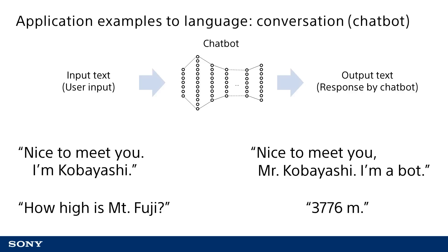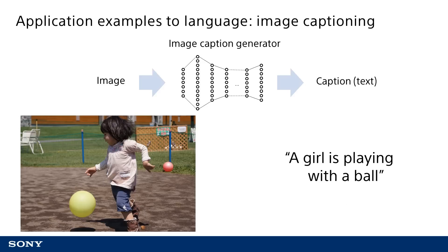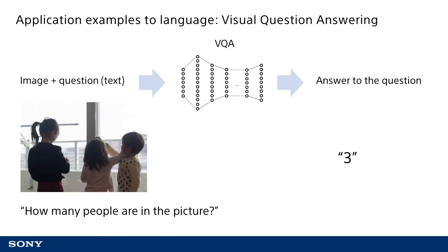The relationship between input and output does not have to be between images or between texts. For example, having an image as the input and a text as the output enables a function called image captioning, which outputs a text explanation of an input image. A combination of images and text can also serve as the input and output, as in visual question answering, where the input is an image paired with a question about it, and the output is the answer. For example, given a photo of three children and the question about how many children are in the photo, the neural network responds with three.